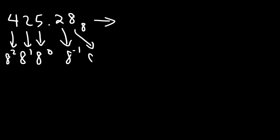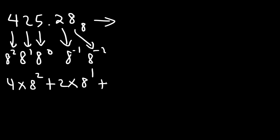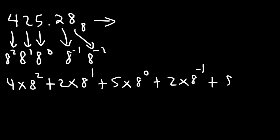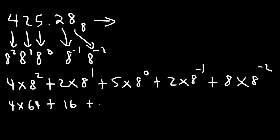The number to the right of the decimal we multiply by 8 to the minus 1, and the last number by 8 to the negative 2. So we have 4 times 8 squared plus 2 times 8 to the first power plus 5 times 8 to the 0 power plus 2 times 8 to the minus 1 plus 8 times 8 to the minus 2. Now 8 squared is 64, and 2 times 8 is 16, and 8 to the 0 is 1, so 5 times 1 is 5.